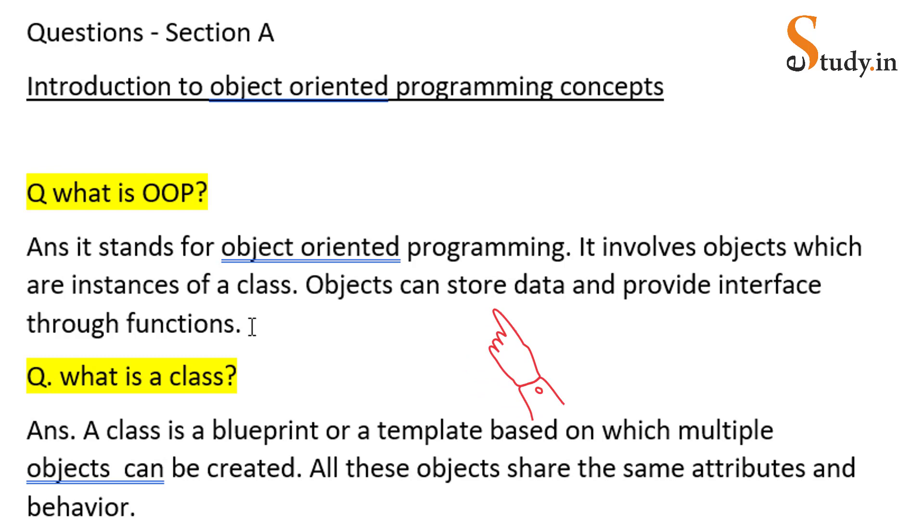Now, what is a class? Next question: A class is a blueprint or a template based on which multiple objects can be created. All these objects share the same attributes and behavior. Now instead of attributes you can write properties or characteristics. Behavior means functions.